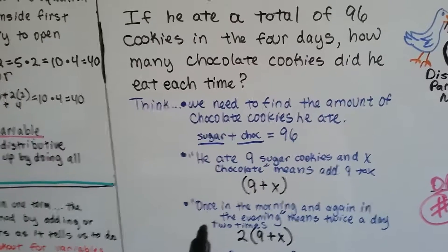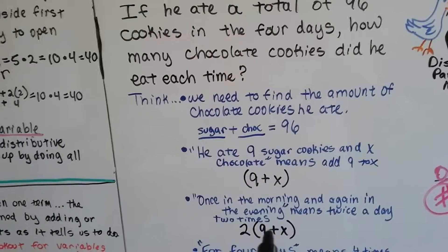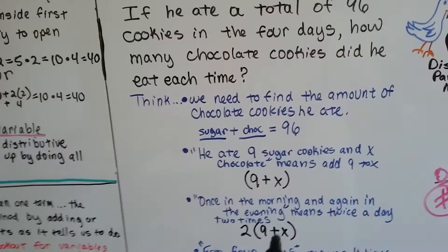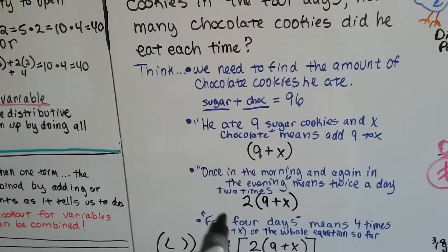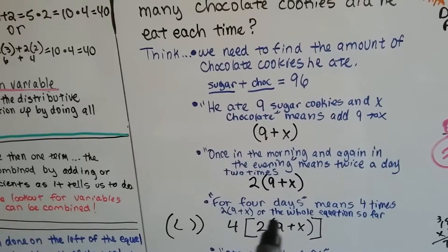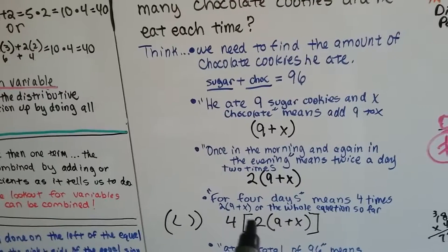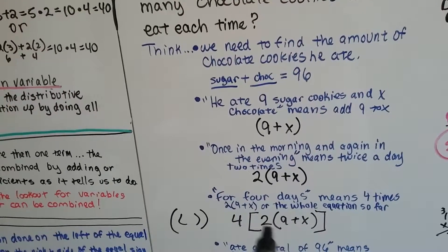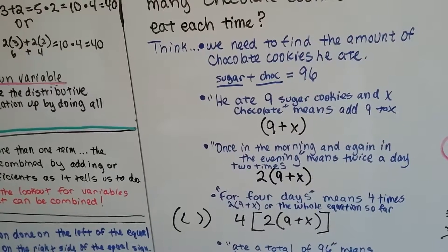Once in the morning and again in the evening means he did it twice a day. So that's 2 times he did the 9 plus X. So now we have 2 times 9 plus X inside of parentheses. For 4 days means he did it 4 times. So we've got the 2 times 9 plus X 4 times. So now we put brackets to separate this group from the 4. It keeps our operations separate.